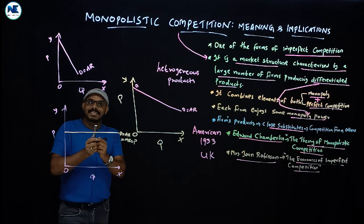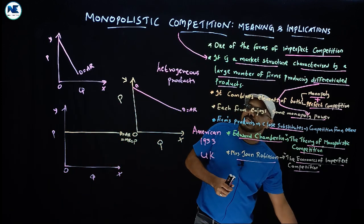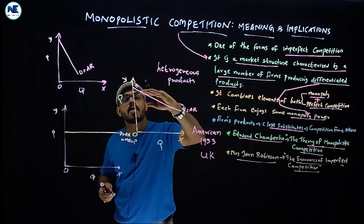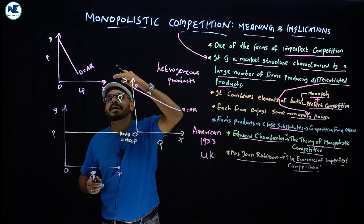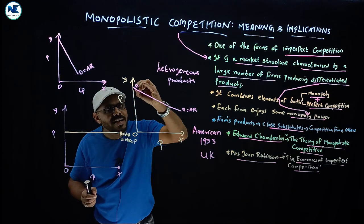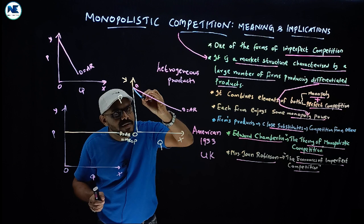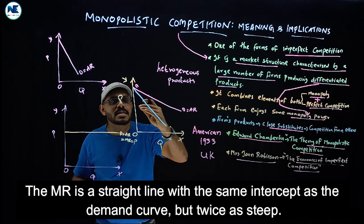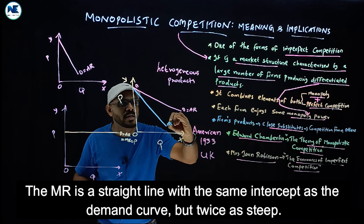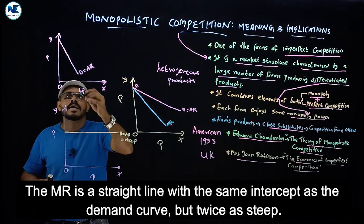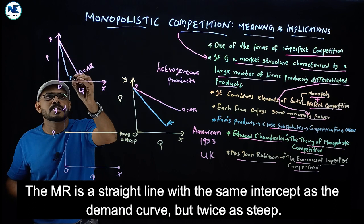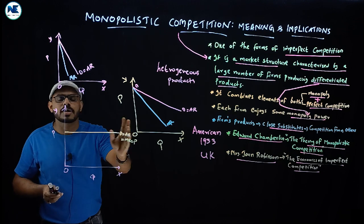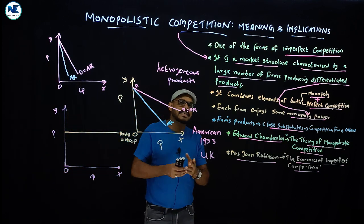Under monopolistic competition, the demand curve is downward sloping from left to right but more flat. Monopoly has a more steep demand curve. Marginal revenue is less than average revenue and slopes downward, twice as steep as average revenue. Under perfect competition, demand equals average revenue equals marginal revenue.